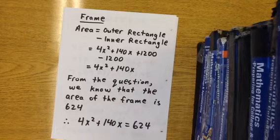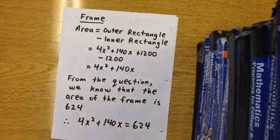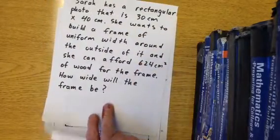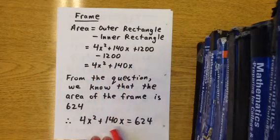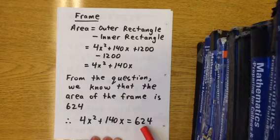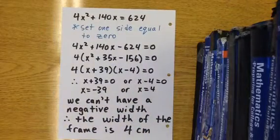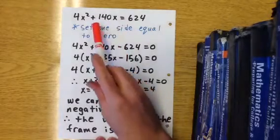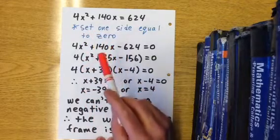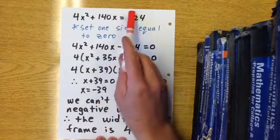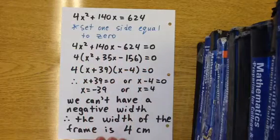From the question, the area of the frame was going to be 624, because it said she could afford 624 centimeters squared of wood. So 4x squared plus 140x equals 624. When you're trying to solve a quadratic equation, you want to let one side equal zero. Subtracting 624 from both sides, we have 4x squared plus 140x minus 624 equals 0.